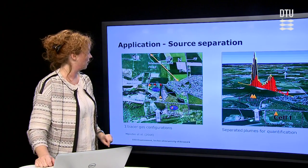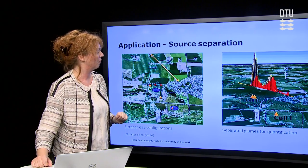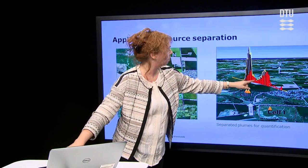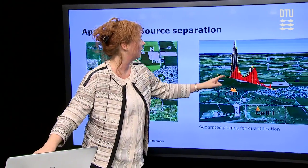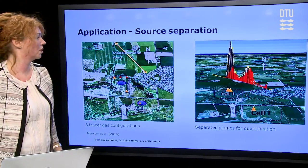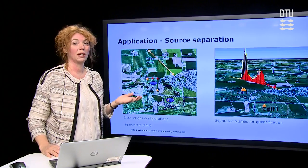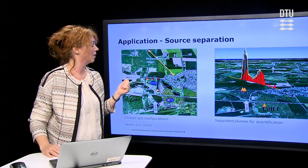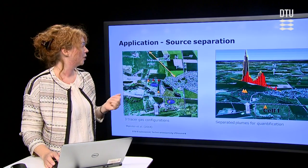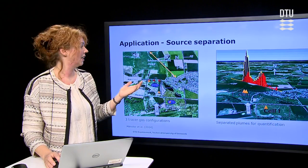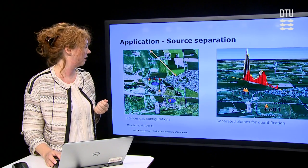So we started putting tracer gas bottles at the two sites and used a specific wind direction. And what you can see here is the methane plume from one site and the methane plume from the neighboring site, and then the corresponding tracer gas plumes. In this way, we could not only quantify the methane emission but we could also separate the emissions from the two different sites. Sometimes you can use wind directions to actually separate emissions from different sites or activities.